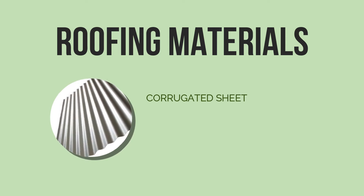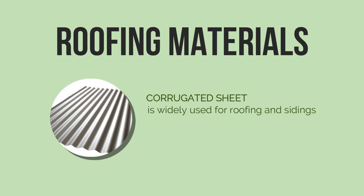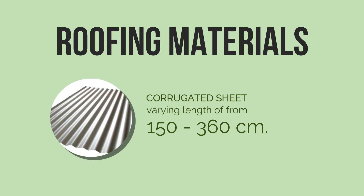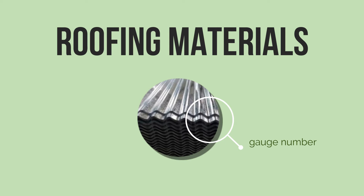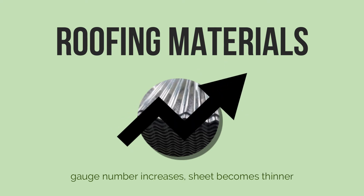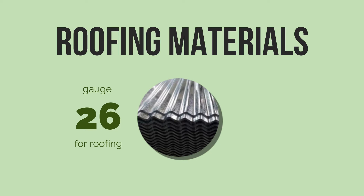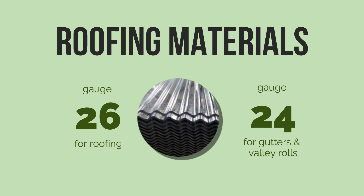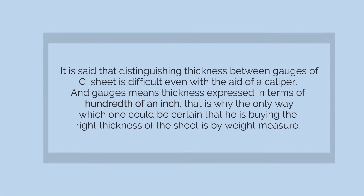Corrugated galvanized iron sheet on the other hand is widely used for roofing and sidings, having a standard width of 80 centimeters with varying length from 150 to 360 centimeters. Its thickness is measured in terms of gauge number from 14 to 30. As gauge number increases, the sheet becomes thinner. Note that gauge 26 is extensively used for roofing and gauge 24 is specified for gutters and valley rolls.